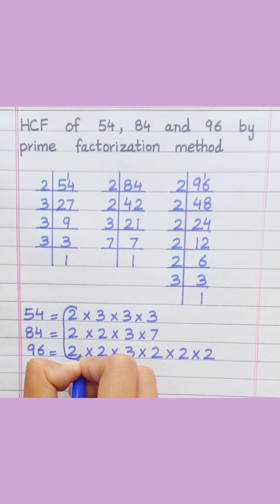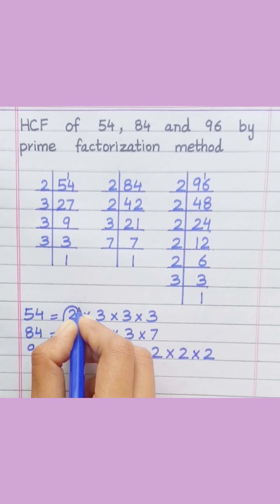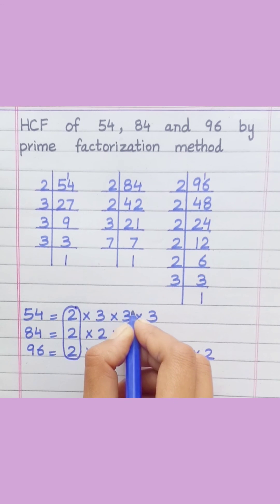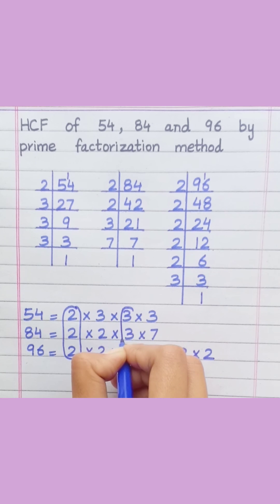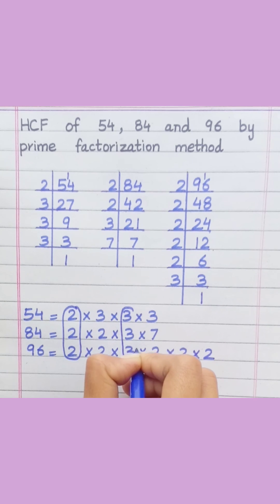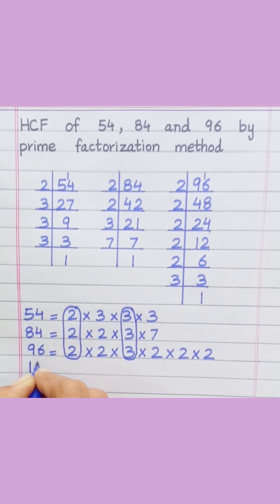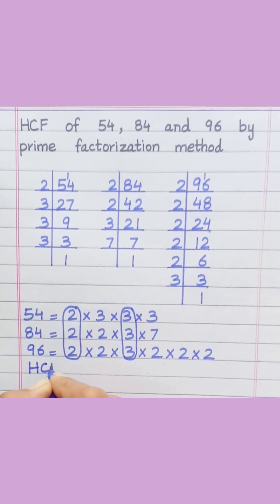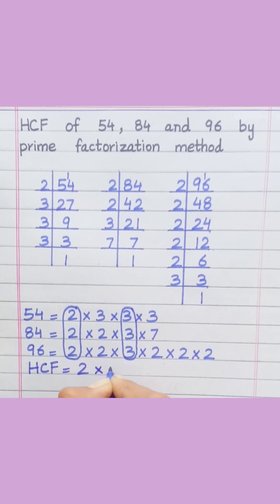Loop the factors that are common to all of the given numbers. HCF equals 2 multiply 3 equals 6.